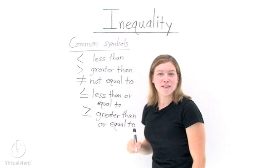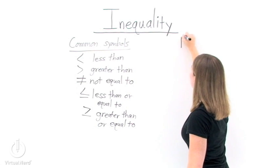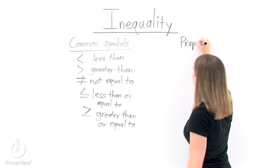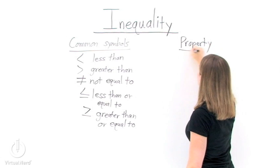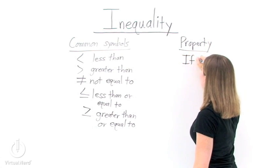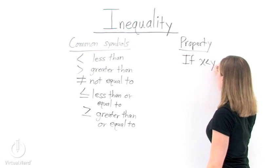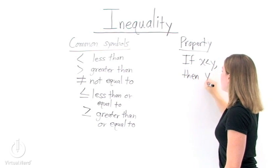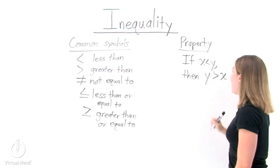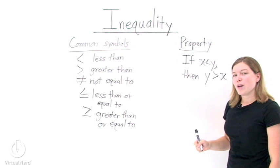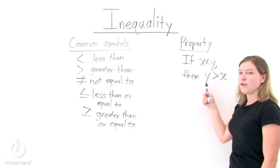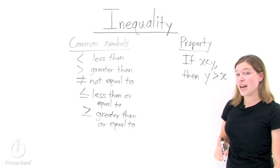Now that we have some common symbols, we need to learn one big property about inequalities. This property states that if we have x less than y, then that's the same thing as y greater than x. What this property means is that if we flip the values, we have to remember to flip the inequality.